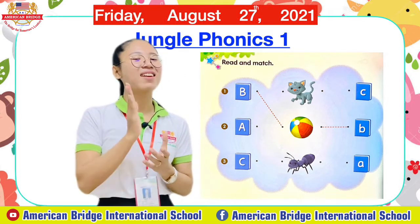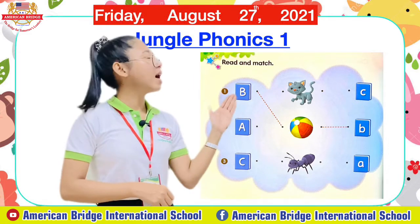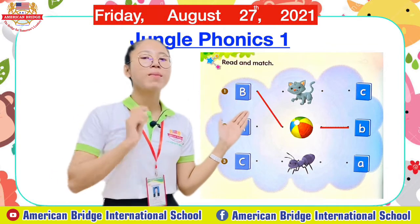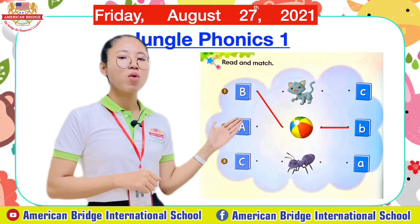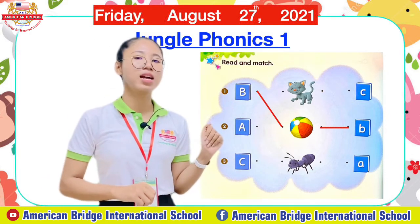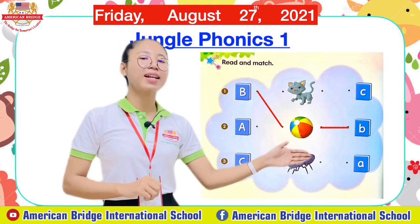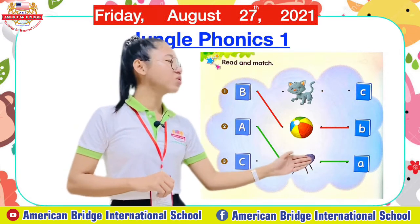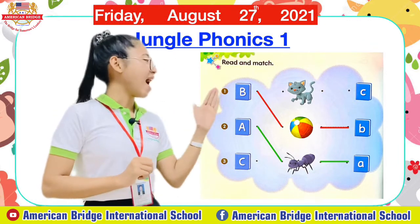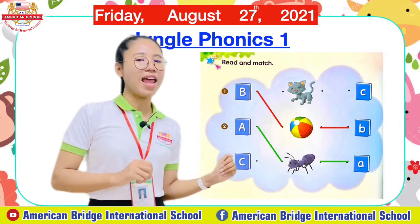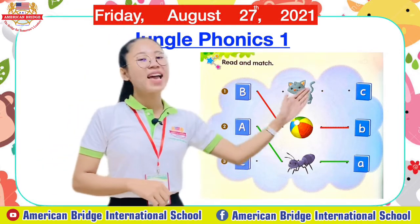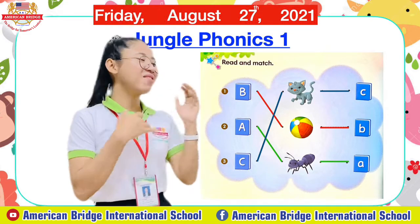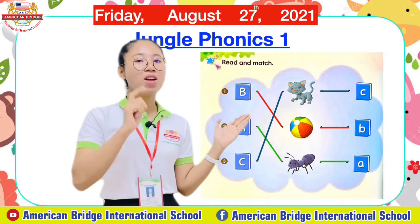Wow, great job everyone! Let's correct it with teacher together. Have you already traced the 'b' sound to our ball? Excellent! Now the second one — 'a' sound — which picture do we match: the first or the third? Match to the third picture, 'and,' then go to small 'a.' The last one — 'c' sound — match to our cat, then match to small 'c.' Now we finish our first exercise.